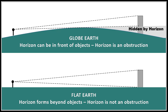This is really a debate about horizons, and this is not rocket science. On a globe earth, the horizon can be in front of objects, and the horizon can therefore be an obstruction that hides the bottom of distant objects. On a flat earth, the horizon forms beyond objects — therefore the horizon is not an obstruction.